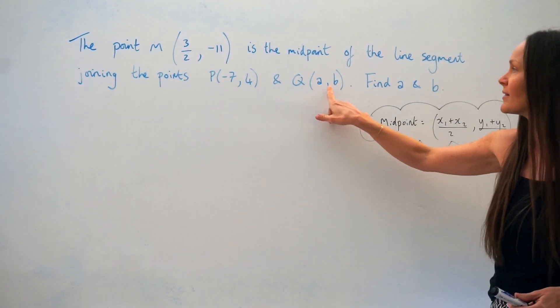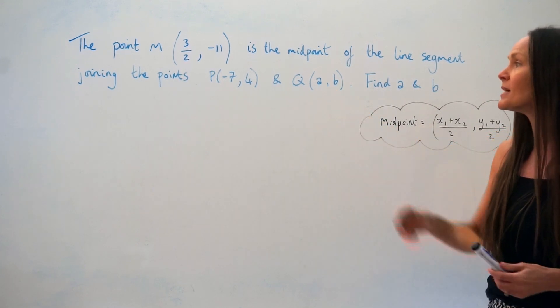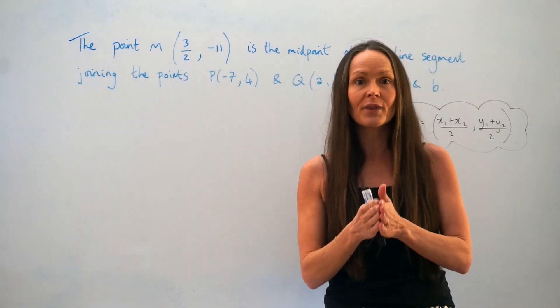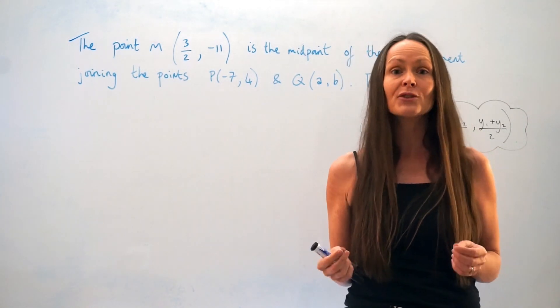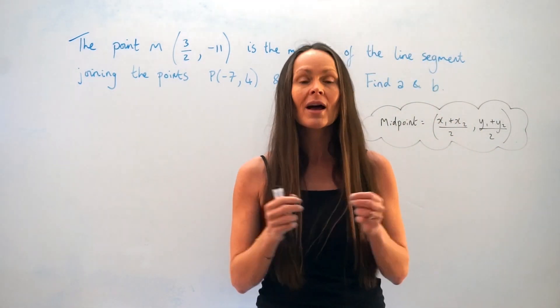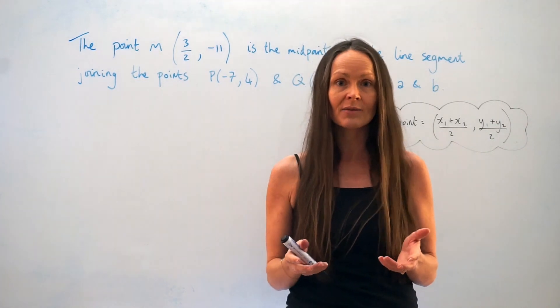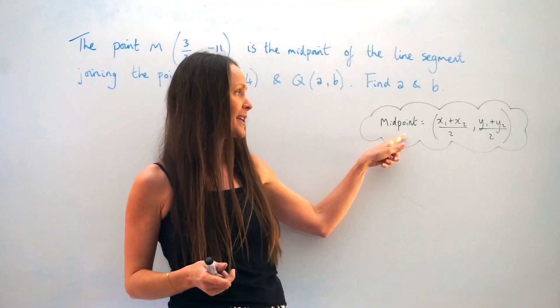We're trying to work out these values of A and B here. So the midpoint is just the middle of the line segment. And to work out the midpoint, you have to add the two x values together and divide by 2, and add the two y values together and divide by 2, just like how I've written in the formula over here.